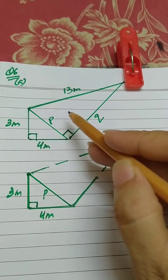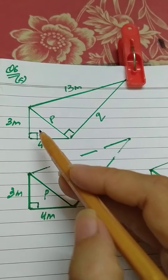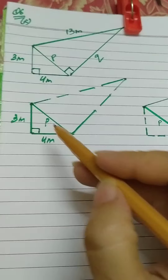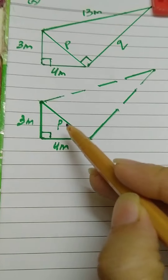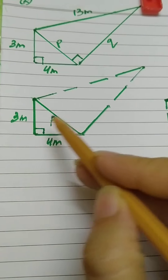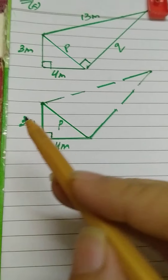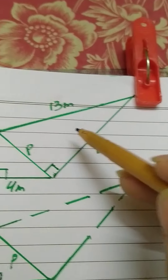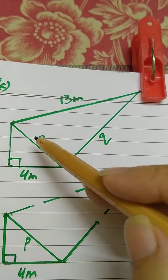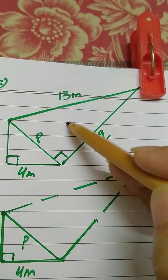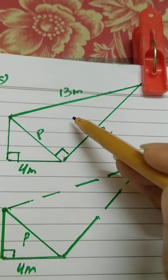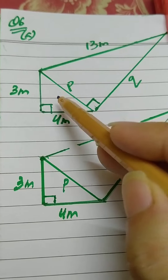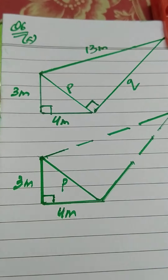Since the triangles are not stated to be similar, we will not use the similarity concept. Both triangles are right-angle triangles, so whenever we find the unknown side of a right-angle triangle, we apply Pythagoras theorem — when two sides are given and the third is unknown. However, in the larger right-angle triangle there are two unknown sides, so we cannot apply Pythagoras theorem there yet. We will first use the smaller right-angle triangle.